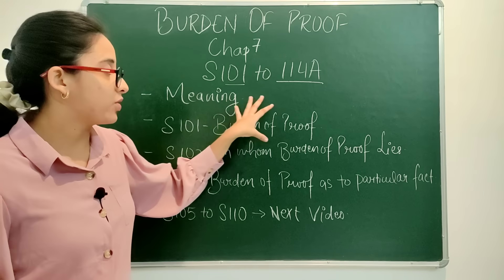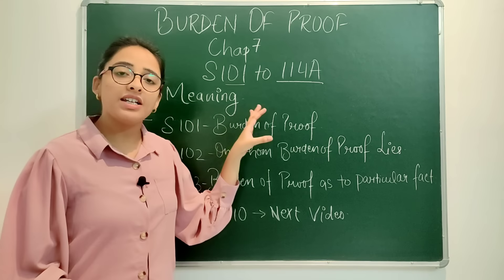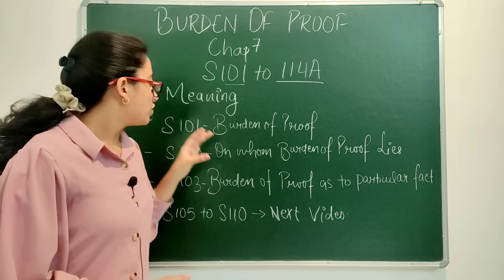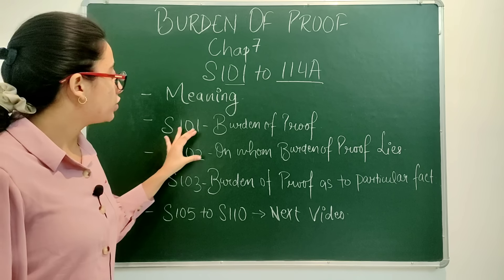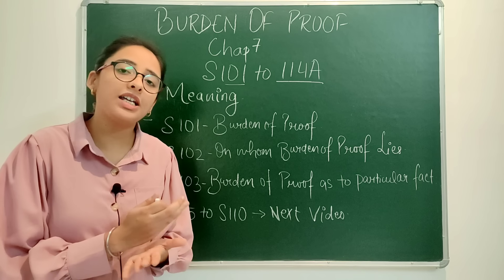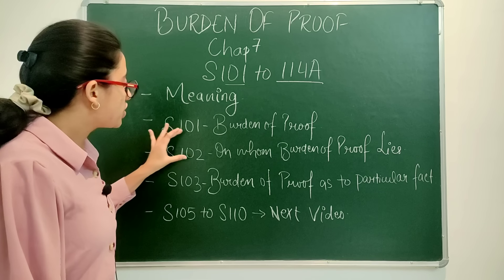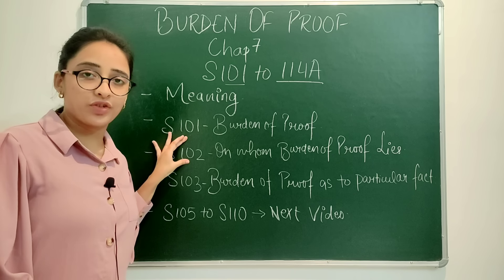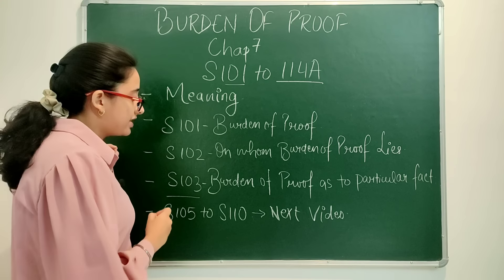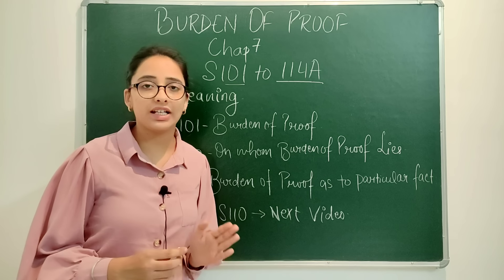Section 101 talks about burden of proof — this is the primary or permanent burden of proof. Section 102 — on whom burden of proof lies — it locates the party upon which the burden of proof falls; this is the shifting burden of proof. And lastly, section 103 talks about burden of proof as to a particular fact.